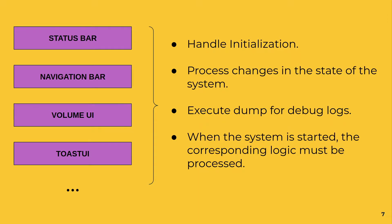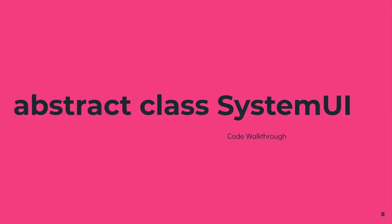Since all the System UI components share this common behavior, there is an abstract class called SystemUI which is extended by all these components. We'll have a look at all these classes during the code walkthrough. For now, just understand that there is a SystemUI abstract class extended by most of the System UI components — there are a few exceptions, but most of them do extend it.